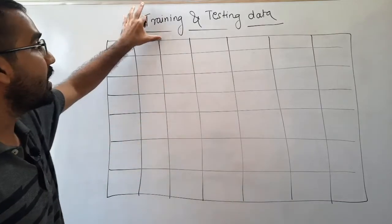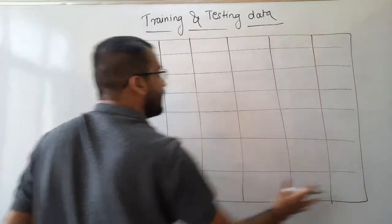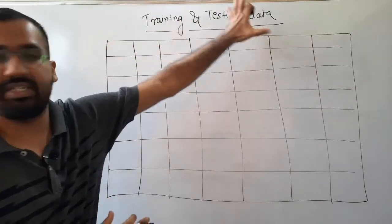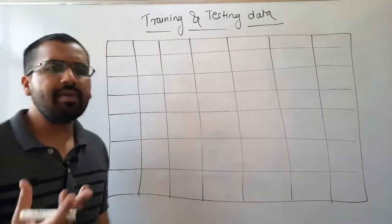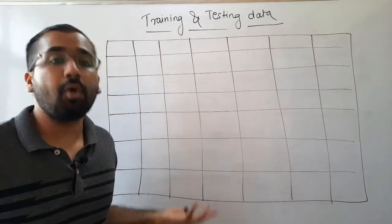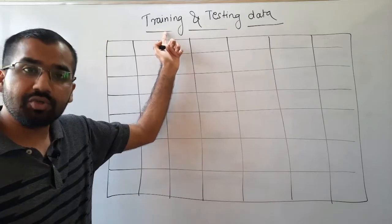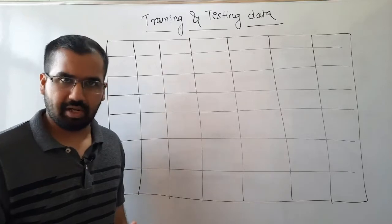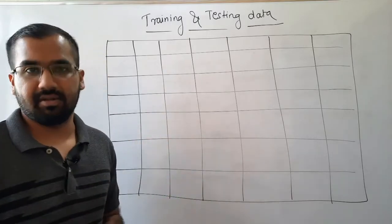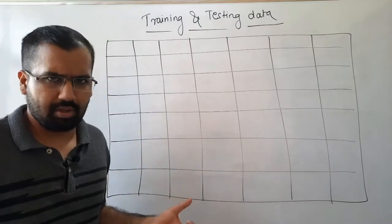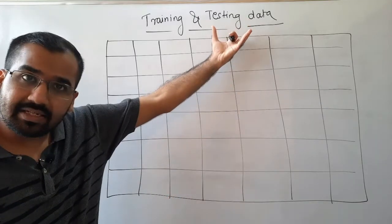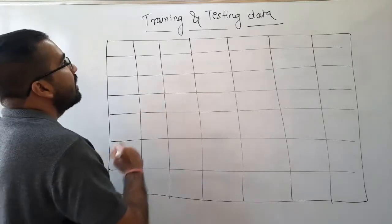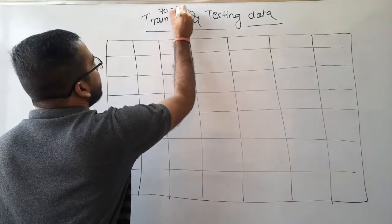What we are going to do first is split this whole data into training data and testing data. As the name suggests, we use the training data when we are trying to train our model. After training, once our model is trained, we want to evaluate it — we want to test the model to see how accurate it is, and for that we use the testing data.